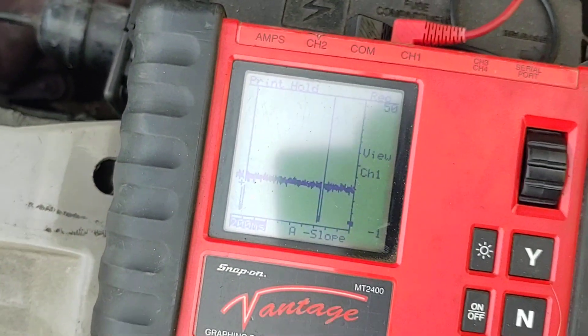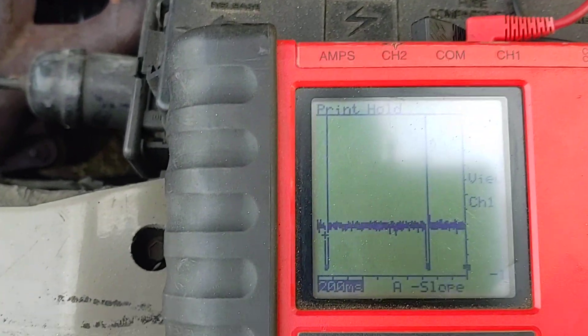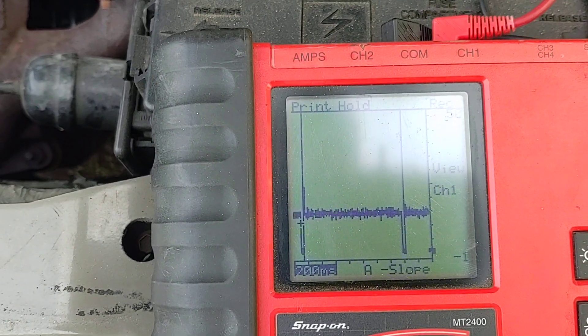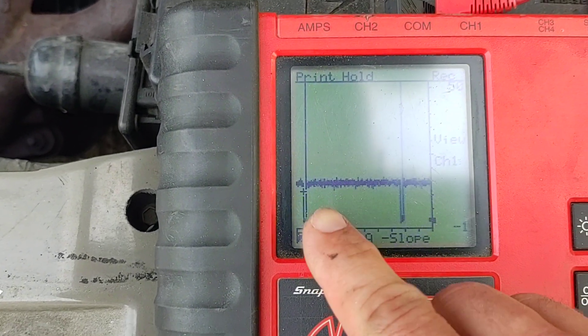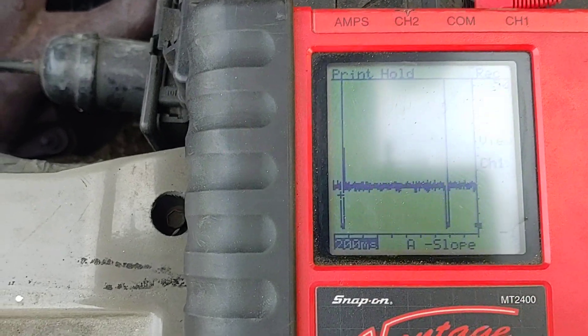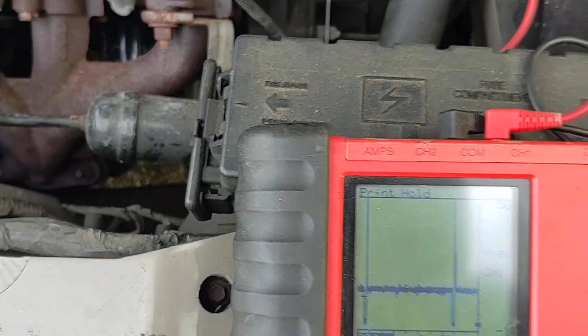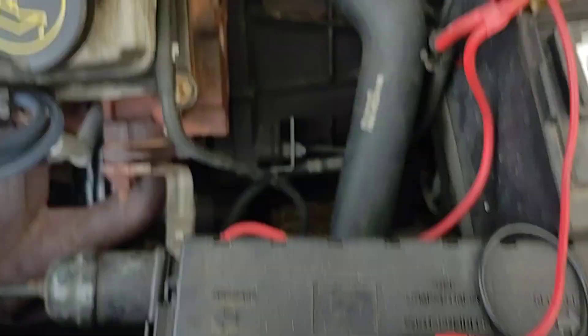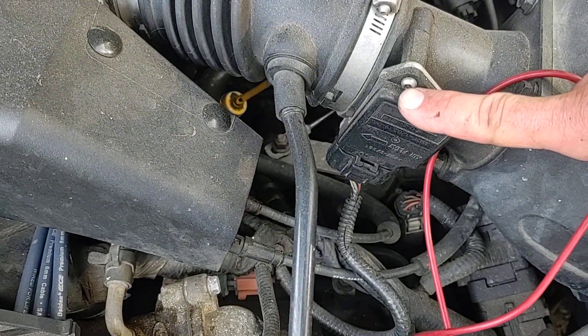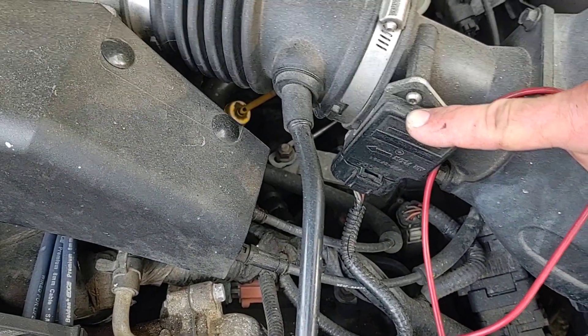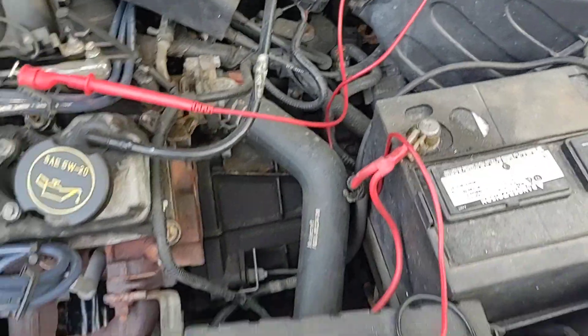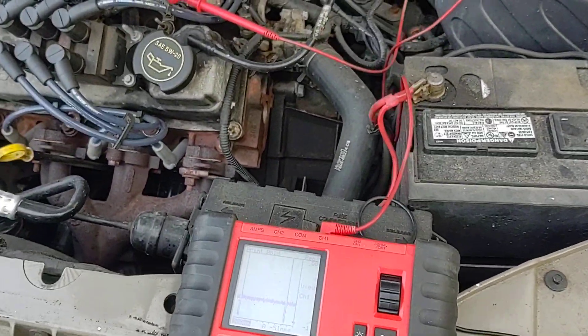And the reason for that is under sudden acceleration we need more fuel. I'm actually going to reposition this scope up to the windshield so that I can sit in the driver's seat and put it in gear and put a load on the engine so we can really make that pulse width go up with load. And as far as sensing load on this engine, this is a mass air flow equipped car. It's got a mass air flow sensor right here after the air cleaner. So that's its main input for load sensing.